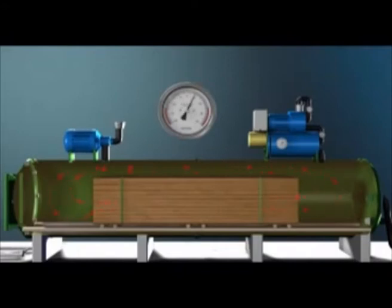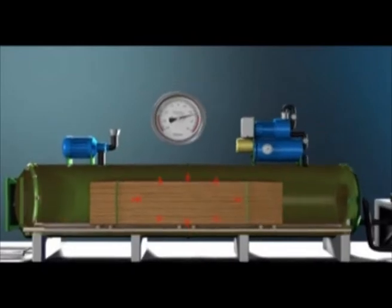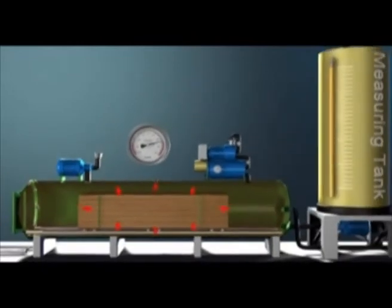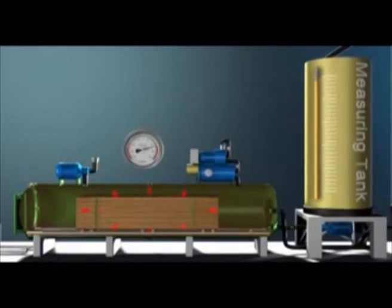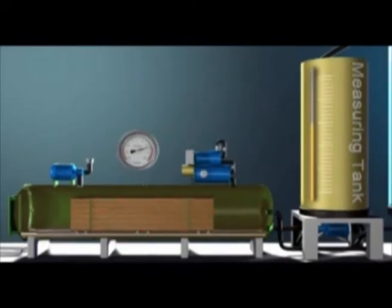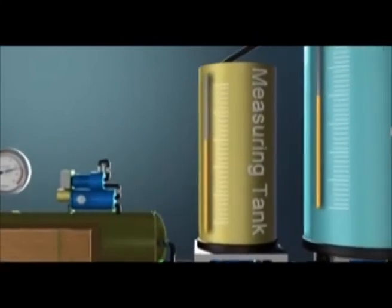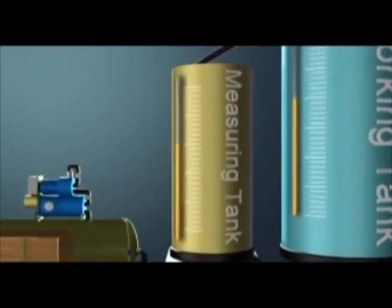The pressure is gradually raised to a specific level and maintained until the required amount of preservative has been pumped into the timber from the measuring tank. The amount of preservative is pre-calculated based on the volume of the timber in the cylinder and the hazard class of intended use. The readings are taken from a side glass or float level attached to the measuring tank.